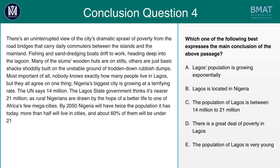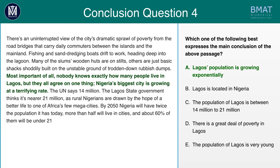Moving on to this question — pause the video and try to identify the main conclusion. Luckily, another trigger phrase is used here: 'Most important of all.' We're told: 'Most important of all, nobody knows exactly how many people live in Lagos, but they all agree on one thing — Nigeria's biggest city is growing at a terrifying rate.' It can therefore be inferred that the main conclusion is that Lagos' population is growing exponentially — meaning increasing by a large volume over a short space of time. The trigger phrase 'most important of all' should guide you to that answer.